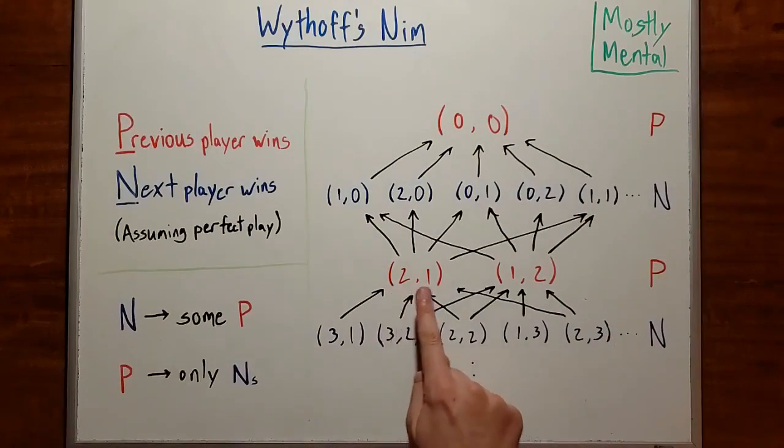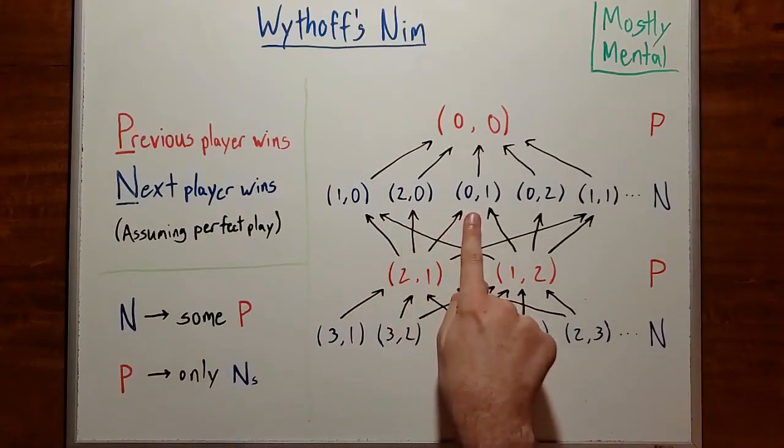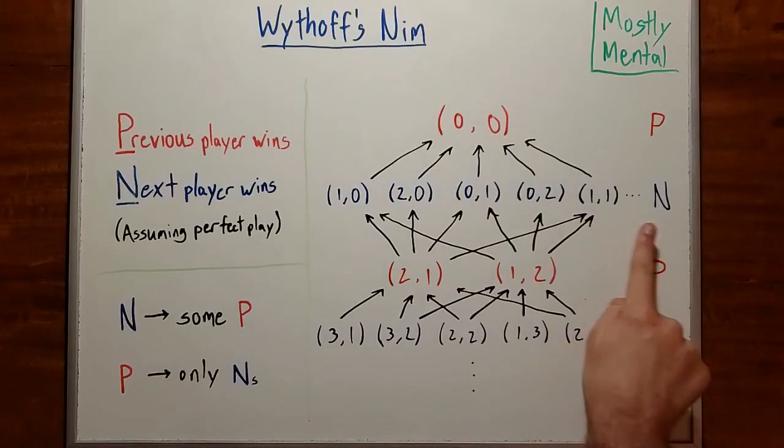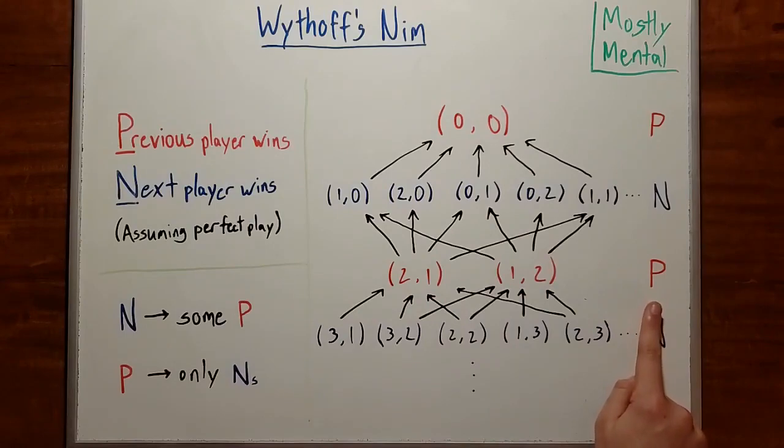Then 2, 1 can only reach 1, 0, 2, 0, 0, 1, or 1, 1, all of which are N positions, so 2, 1 is a P position, and by similar logic, so is 1, 2. And all the positions that can reach either of those are N positions. And so on. If we keep going like this, we can eventually classify every position as either P or N.